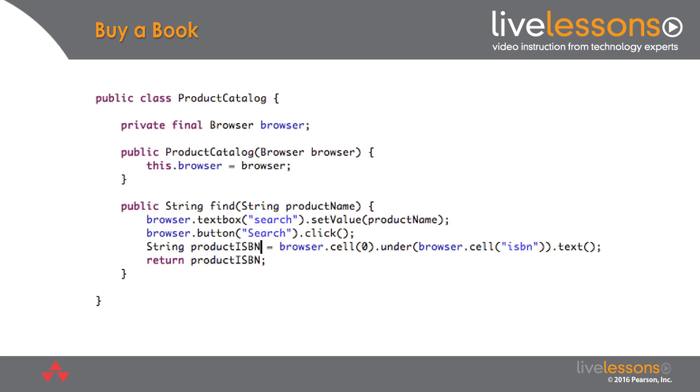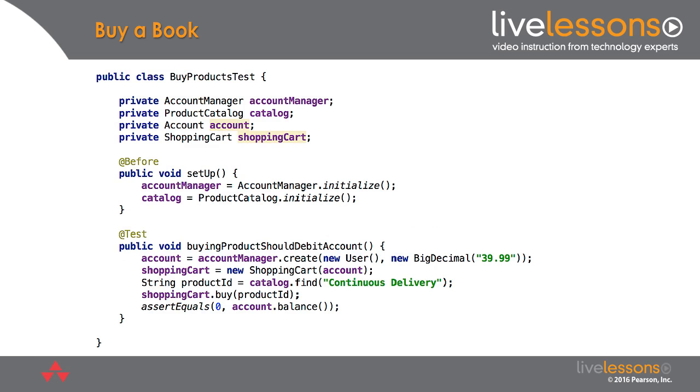And so underneath both this layer and the layer in the executable specifications example, we've got actually a product catalog cart which knows how to interact with the system under test by actually clicking on text boxes and buttons and reading back what happens in the browser.